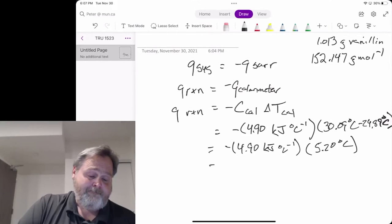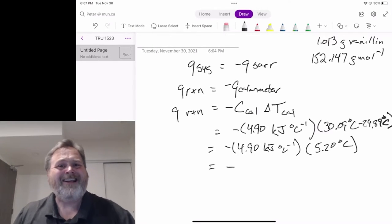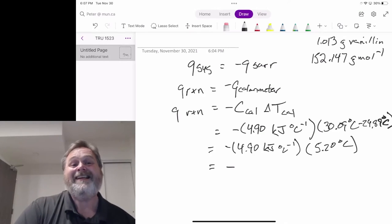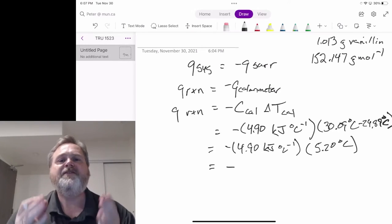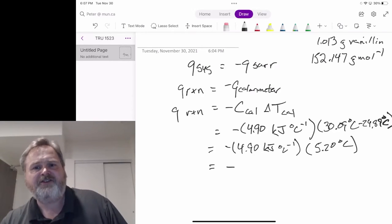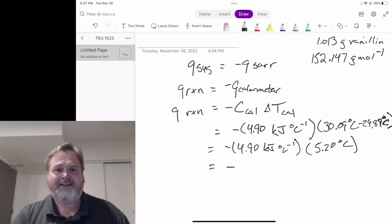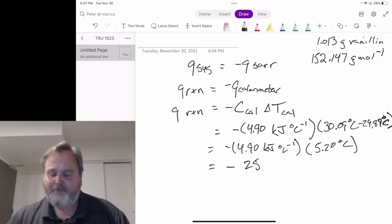So, now we can see that the Q of the reaction, it's negative because of that positive temperature change for the surroundings. That means the heat was given off by the system, which makes sense for a combustion reaction. How much heat was given off by that reaction? Well, it's the 4.90 kilojoules per degree Celsius of temperature change times the 5.20, and that's 25.48 kilojoules.